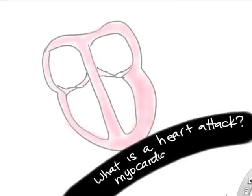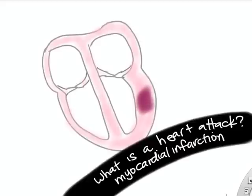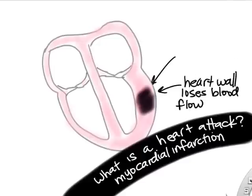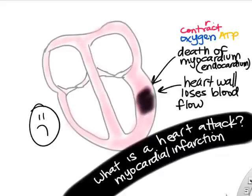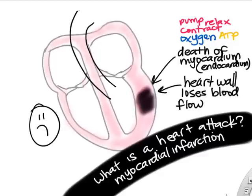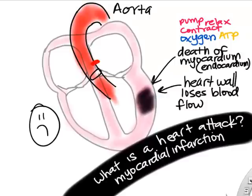What is a heart attack? A heart attack — myocardial infarction, or MI — occurs when part of the heart wall starts to die due to lack of blood flow. The heart wall is our myocardium, and if the myocardium and endocardium don't get blood supply, those cells can start to die and not work correctly, affecting the pumping ability of the heart. Cells need oxygen to make ATP, and cardiac myocytes need lots of oxygen to contract.